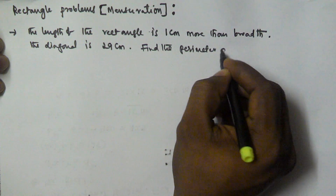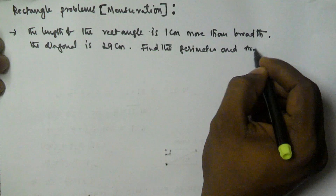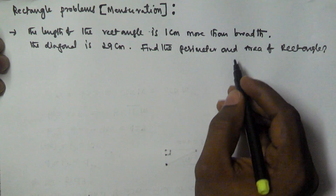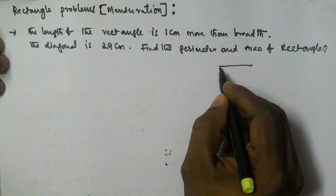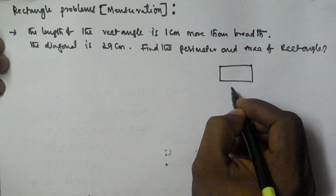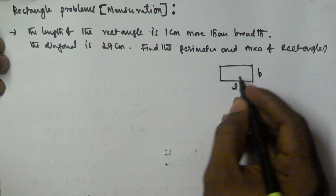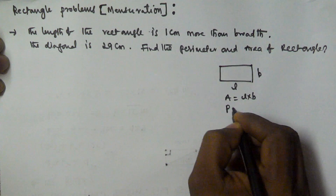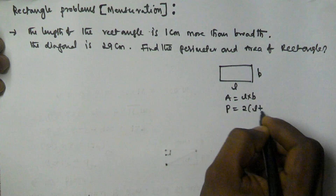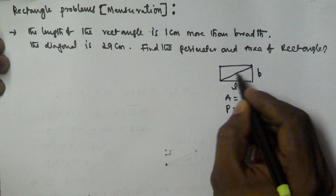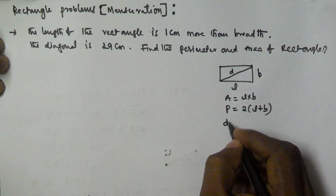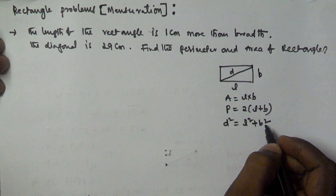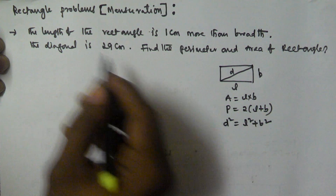As we saw in the previous video, the shape of the rectangle has length l and breadth b. The area is given by l × b, the perimeter P is given by 2(l + b), and the diagonal d is given by d² = l² + b², using the Pythagorean theorem.